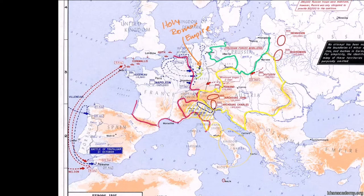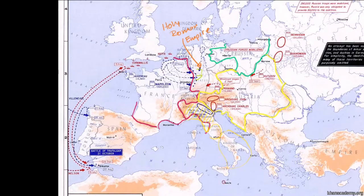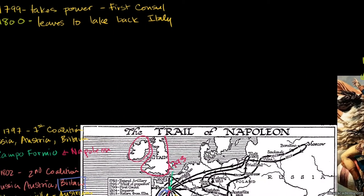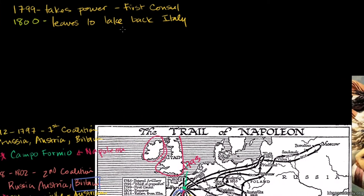Germany at this point — that confederation of kingdoms — was referred to as the Holy Roman Empire, where the King of Austria held the title of Holy Roman Emperor, but he didn't control the Holy Roman Empire in a very centralized fashion. It was controlled by a bunch of smaller kings. So that's Napoleon crossing the Alps in 1800. He defeats Austria, and that is essentially the end of the Second Coalition. In 1801, you had the Treaty of Lunéville, ending the Second Coalition.